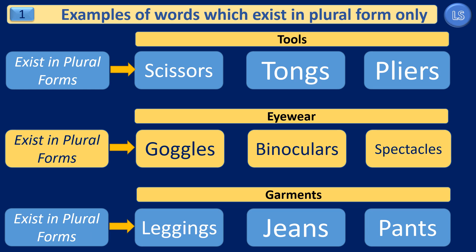To understand the scenario of words which always exist in plural forms, we have taken different groups of examples, and in each group we have different subsections. In the first group, the first subsection is tools. Under tools, we have the words scissors, tongs, and pliers. We don't call them scissor, tong, or plier, because these words always come in plural forms.